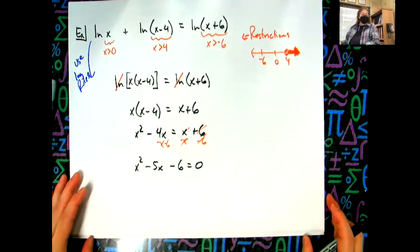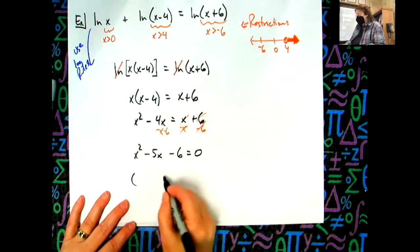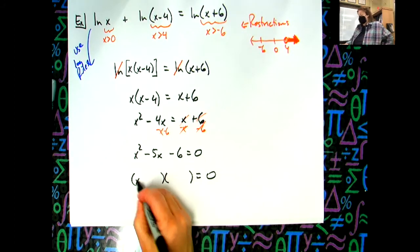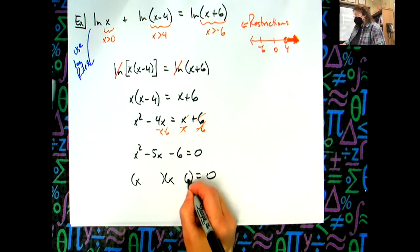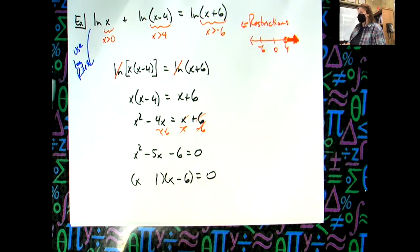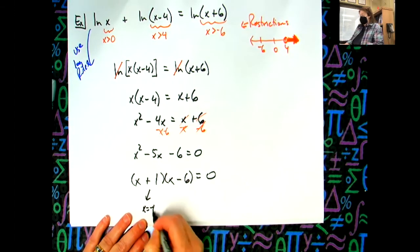Alright, and then again we always hope and want this to factor. If it doesn't factor though, you can go to quadratic formula. Okay, so I think six and one is going to work. I have a six and one, I want the middle term to be negative so six got to be negative, one's got to be positive in order to subtract. Don't let me make a mistake. x equals negative one, x equals six.